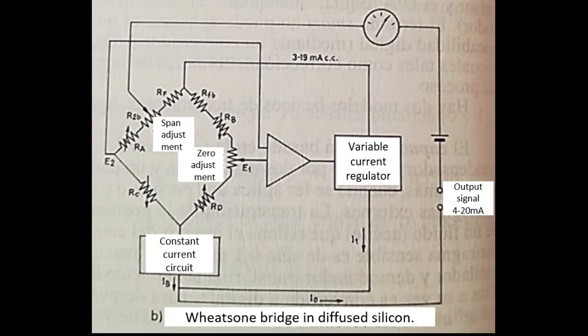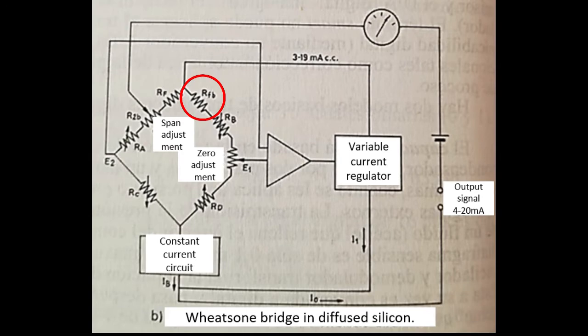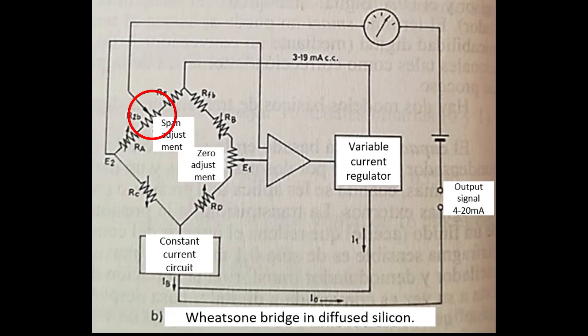A direct current range of 3 to 19 mA with 1 mA from the bridge produces a 4 to 20 mA output signal. This current flows through the feedback resistor RFV and raises E1 to a voltage equivalent to E2 by rebalancing the bridge. The voltage drop across RFV is proportional to Rb, and this resistance sets the span of the transducer.